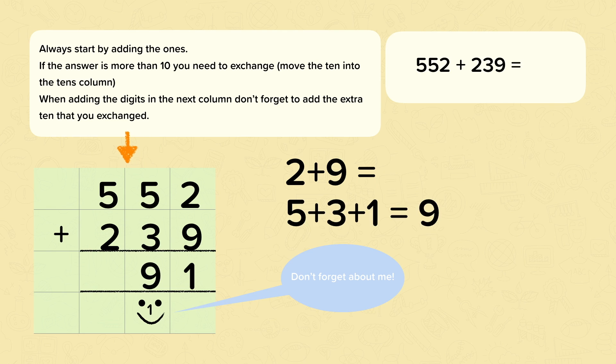Then we move on to the hundreds. Five add two is seven. So our answer is 791.